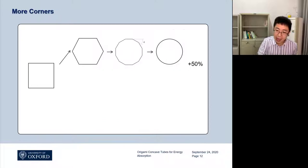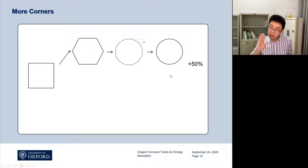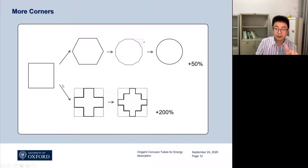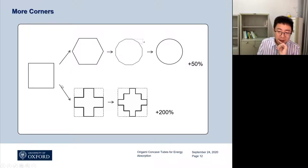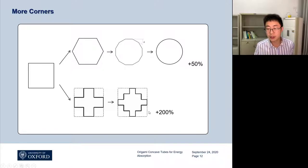The idea is: what if we can increase the number of corners? Then the energy absorption will increase — the area underneath the curve will increase. This has been proposed by others before. One way is to increase toward a circular tube, which improved energy absorption by 50 percent. But that's the limit — you cannot have more. There's another way of increasing that starts to be more my contribution.